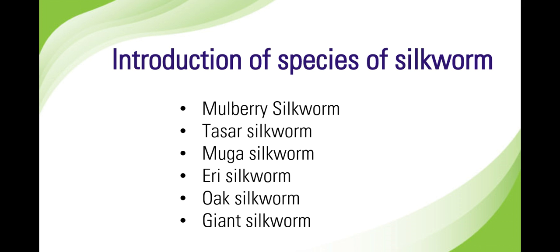The cocoon produced by the tassar moth is hard and of hen egg size, which produces brown color silk. The third one is the muga silkworm — it also belongs to the family Saturniidae and is semi-domesticated in nature. The native place of this species is Assam.